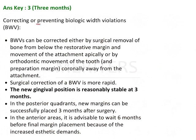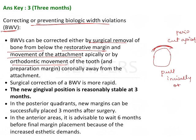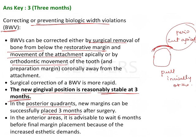Correcting or preventing biologic width violations (BWV) can be done by surgical removal of bone from the restorative margin, by movement of attachment apically, or by orthodontic movement — so either cut apically with perio, or pull the tooth out incisally with ortho. In the current question we're talking about crown lengthening. The new gingival position is reasonably stable by three months in posterior quadrants, allowing placement of final margins and restoration.